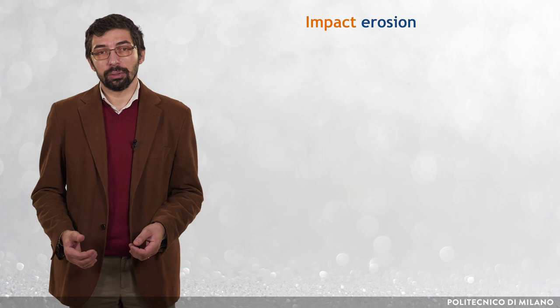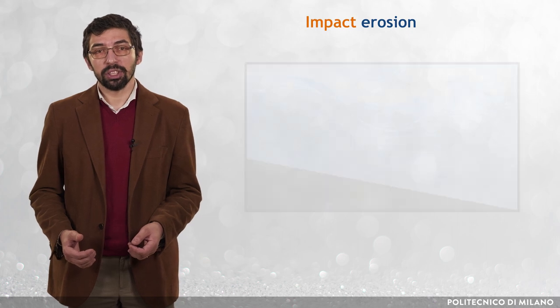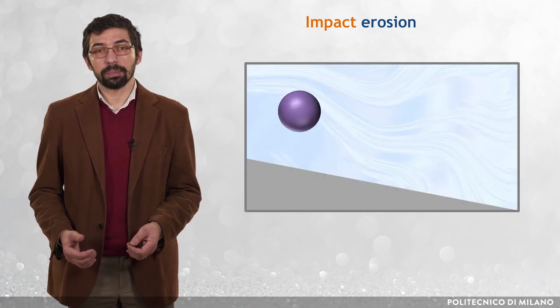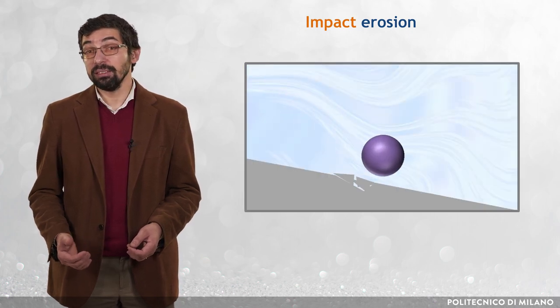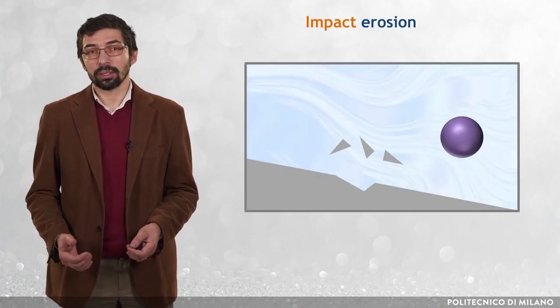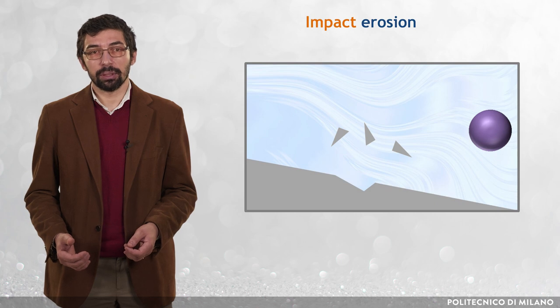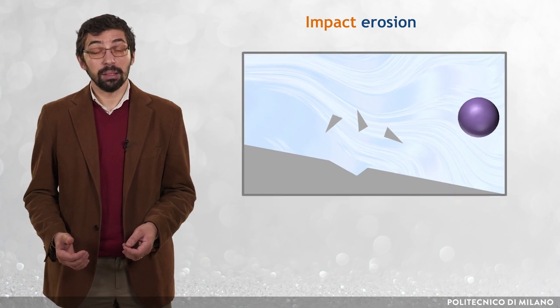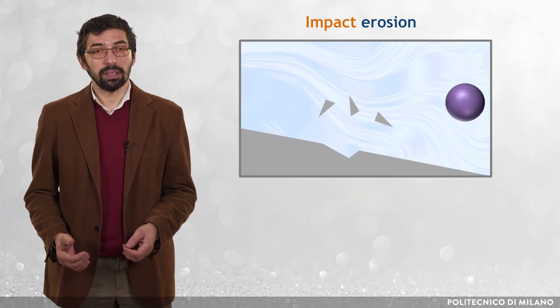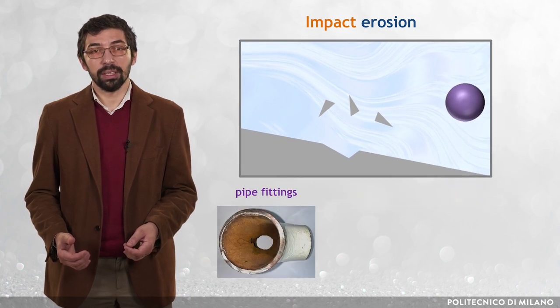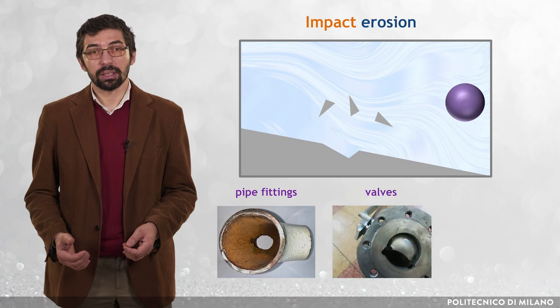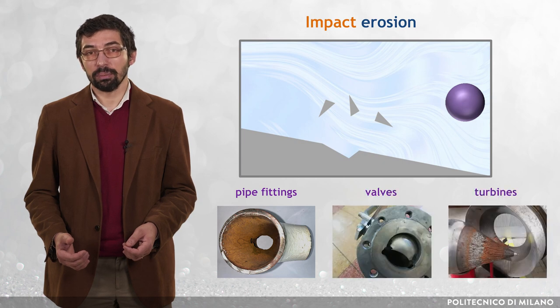There are different types of erosion. In this course, a reference is made to impact erosion, in which the damage is produced by individual particles colliding against the target body, as it typically occurs in pipeline fittings and junctions, valves, hydraulic turbines and pumps.